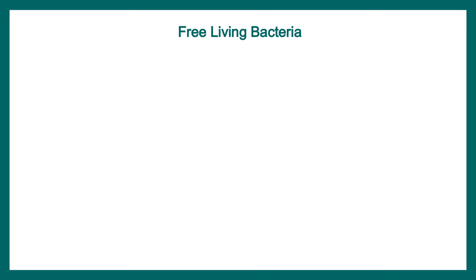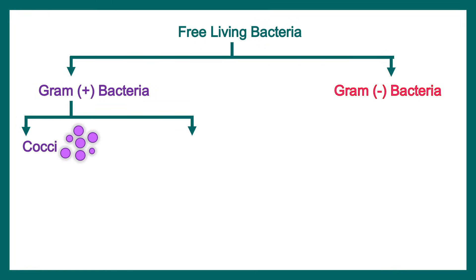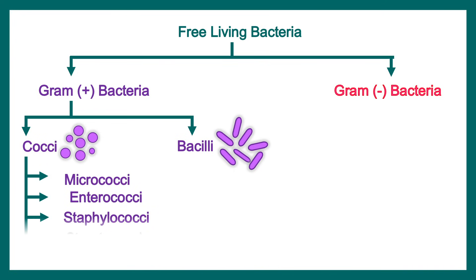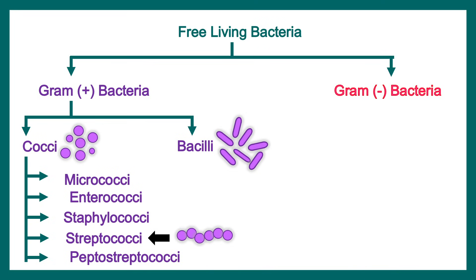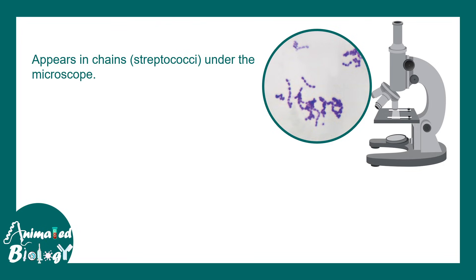In the bacterial kingdom, bacteria can be classified as gram positive or gram negative based on gram staining. Under gram positive bacteria there are cocci and bacilli. Cocci are round, ball-like shaped organisms whereas bacilli are rod-shaped. Among the cocci there are several subtypes and streptococci is one of them. Streptococci appear as a chain of small sphere-like structures visible under the microscope, and they stain positive for gram stain, appearing violet in color.